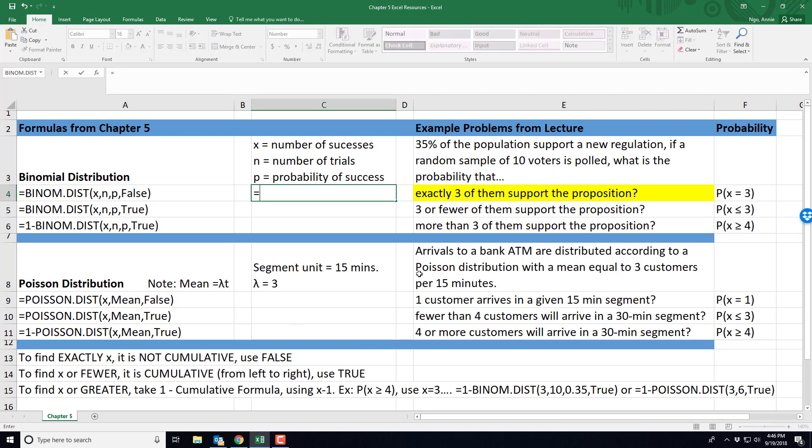So if I type in equals BINOM.DIST and you can see in Excel it tries to pre-populate or suggest what you're looking for. So you can keep typing it or you can just double click on it. It will finish setting it up for you.